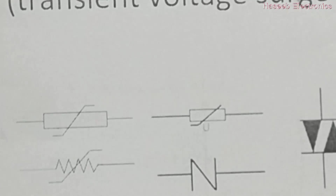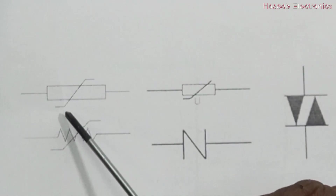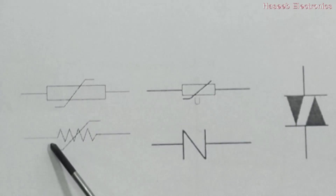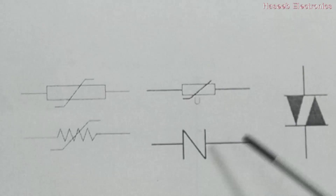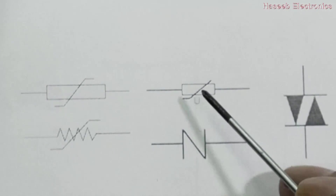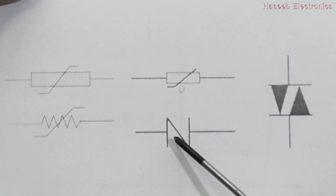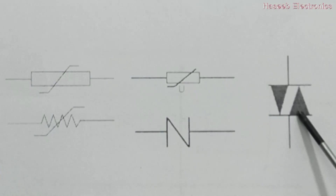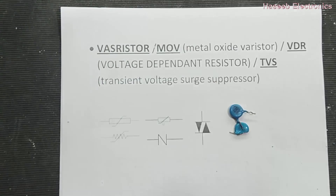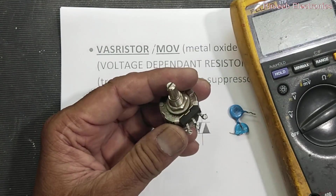If we see in the circuit diagram, we can see symbols like a resistor with a Z shape, or a resistor Z shape cut — it might be mentioned as URV. Or we have a Z symbol, then a double diode which is a diac. It is the same thing — a voltage dependent resistor, VDR.